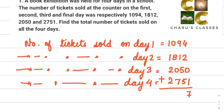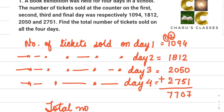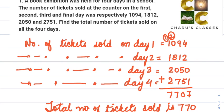Adding the ones: 4+2+0+1 = 7. Tens: 9+1+5+5 = 20, write 0 carry 2. Hundreds: 0+8+0+7 = 15 plus 2 carry = 17, write 7 carry 1. Thousands: 1+1+2+2 = 6 plus 1 = 7. So the total is 7,707. The total number of tickets sold is 7,707.